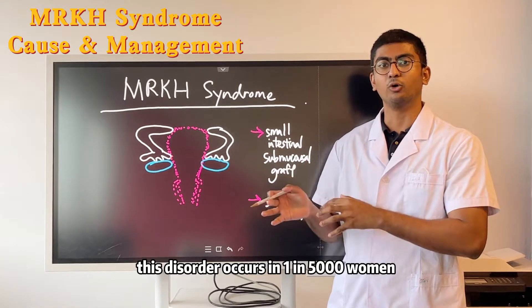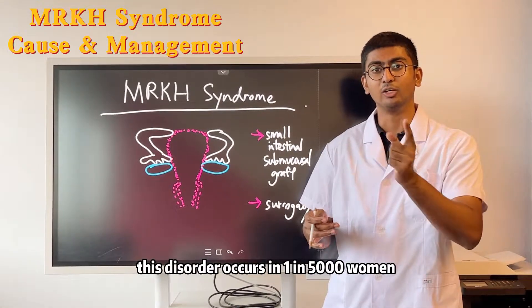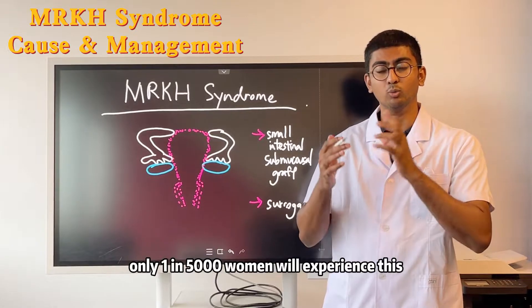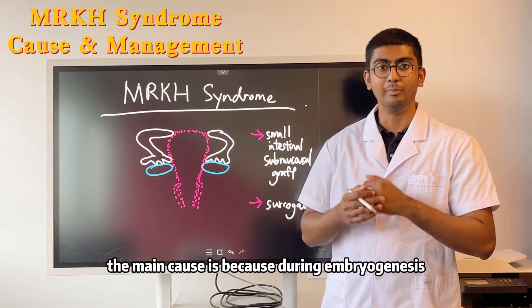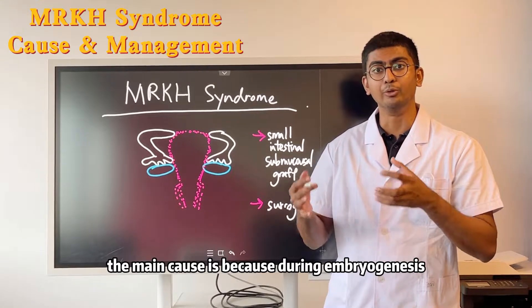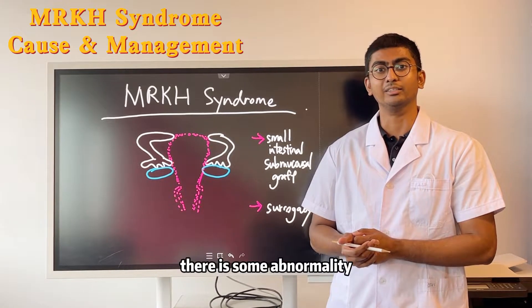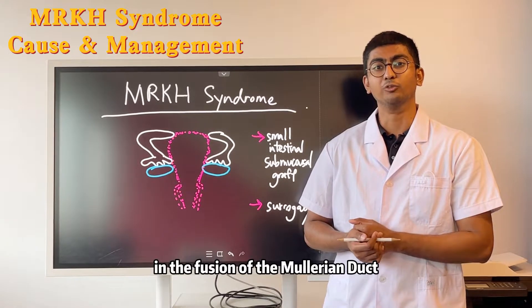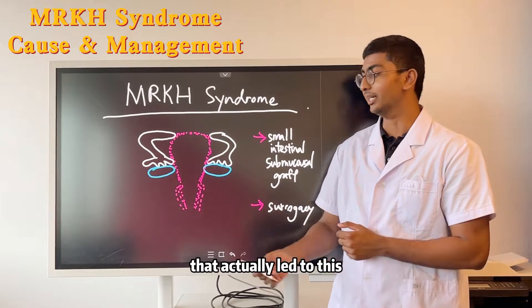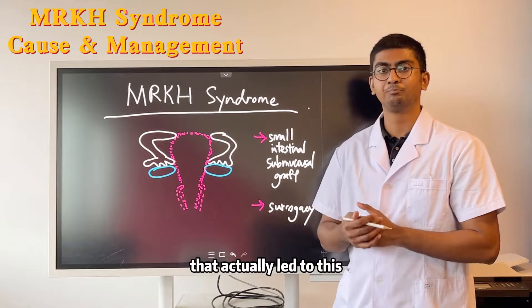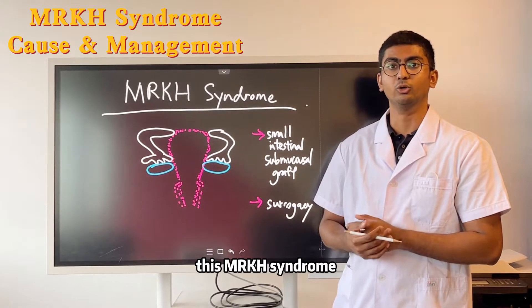This disorder occurs in 1 in 5,000 women. The main cause is that during embryogenesis, there is some abnormality in the fusion of the Müllerian ducts that leads to MRKH syndrome.